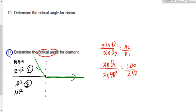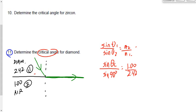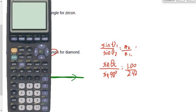Remember, we're going from medium 1 to medium 2. Medium 1 was diamond, medium 2 is air, so it's 1 over 2.42. Since sine 90 is 1, it simplifies to 1 over 2.42, giving a value of 0.413. Taking the inverse sine of that, we get 24.4 degrees.